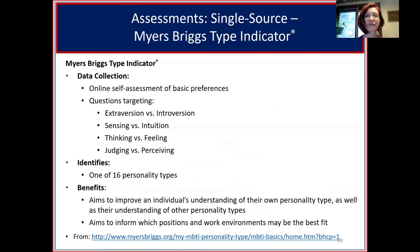The Myers-Briggs personality test is an online assessment targeting basic preferences: extroversion versus introversion, sensing versus intuition, thinking versus feeling, and judging versus perceiving. It identifies one of 16 personality types and aims to improve understanding of your own personality type as well as others', and may help inform which positions and work environments may be the best fit.